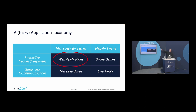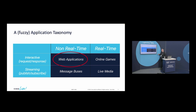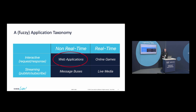If you look at the world of applications as a whole, you can divide it into a two-by-two taxonomy. You have non-real-time and real-time with different requirements. But also in terms of semantics, you have interactive request-response — synchronous — and you have streaming, the asynchronous publish-and-subscribe. Web apps are very much in that top-left corner.